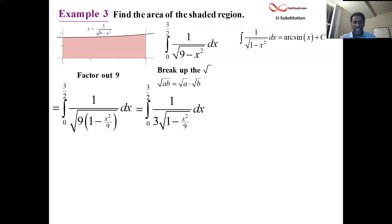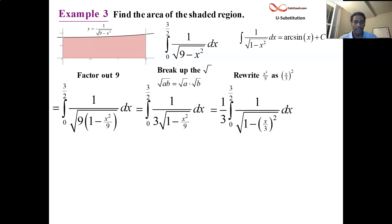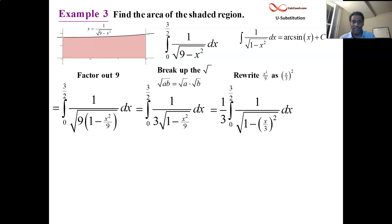We want to look like 1 over the square root of 1 minus something squared. Our something, which should be represented as a square, is x squared over 9 — it is a perfect square. What is it the square of? It's the square of x over 3. So just rewrite it like that. Pull the 1 third all the way out. Now you are ready for u-sub, because if x over 3 is u, you have exactly the arc sine of u as the antiderivative. There's an inside function which is x over 3, and its derivative is 1 third — pretty much the outside function.